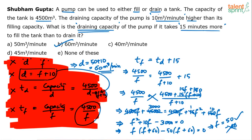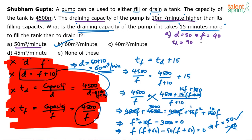How do you go completely by options? For example, look at option A. According to option A, the draining capacity is 50, which implies filling capacity F equals 40 (since draining is 10 more than filling). Time to drain equals 4500 by 50 equals 90. Time to fill equals 4500 by 40, which will not give an integer value. A non-integer minus an integer cannot equal 15, so option A is wrong.